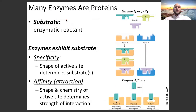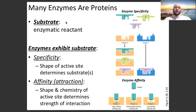Most enzymes that we'll talk about are proteins, though some have RNA in them. The substrate of an enzyme is the enzymatic reactant — the substrate is the enzymatic reactant. Enzymes exhibit substrate specificity, which we've talked about some in this class and will continue to discuss throughout the semester. The shape of the active site determines substrate specificity, and this diagram really demonstrates it.